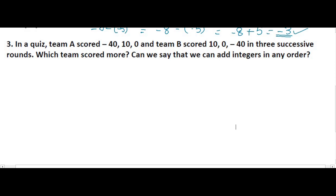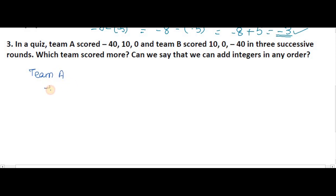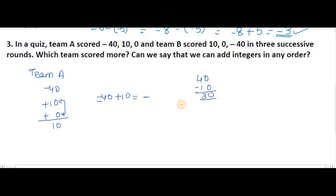There is no need to add in any particular order only. So now we are adding all those numbers. In three successive rounds, Team A's scores are: minus 40 plus 10 plus 0. These two are positive integers, so first we add 10 plus 0, which is 10. Then minus 40 plus 10 — since minus is the bigger symbol, the answer will be minus, and since the two symbols are different we subtract: 40 minus 10 equals 30. So Team A's score is minus 30.